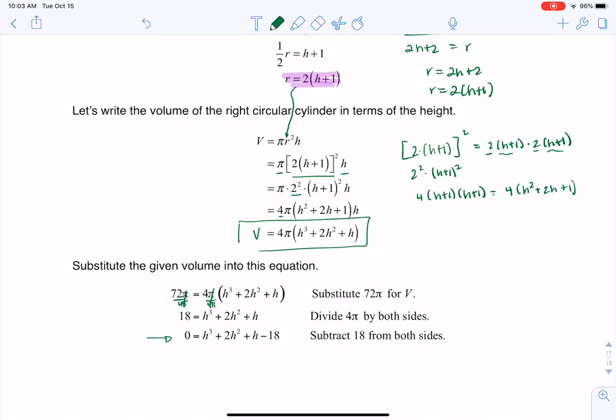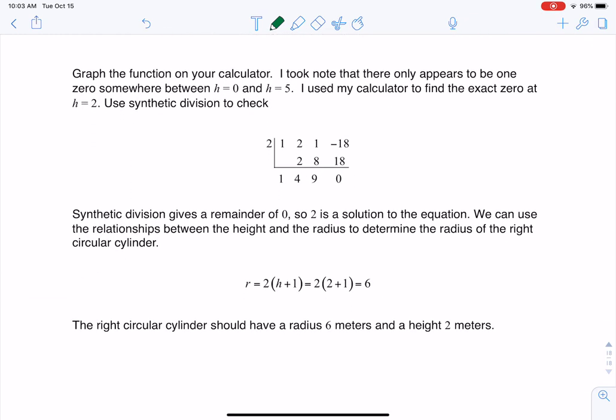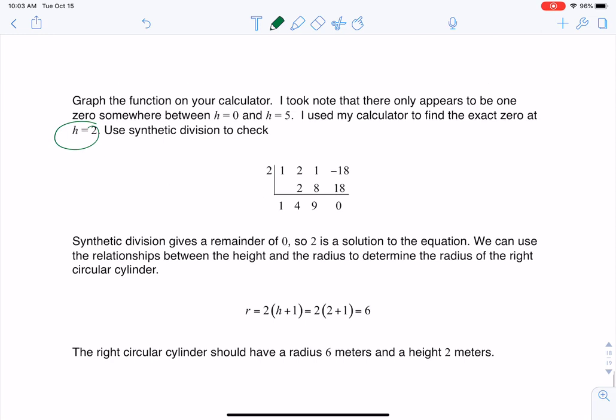But let me scroll. You'll see that what I did was I plugged this into my calculator, and it looked like there was only one 0 to me between a height of 0 and a height of 5. So I used my calculator to find that exact value, which was h equaling 2. And let me just remind you, I'm going to just transfer this over.